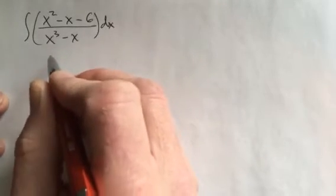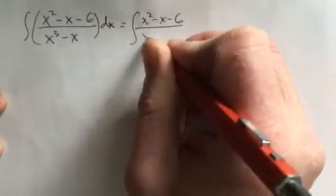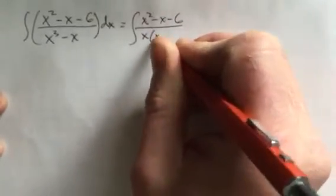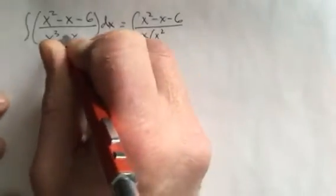In doing that, we get the integral of x² - x - 6, but it's going to be over x times x². Oops, I want that to be a plus x. That is a plus x in this example.